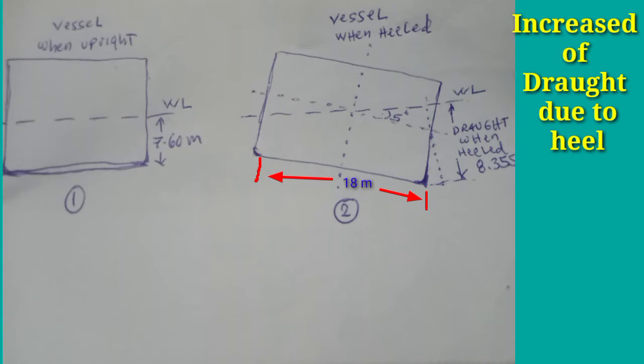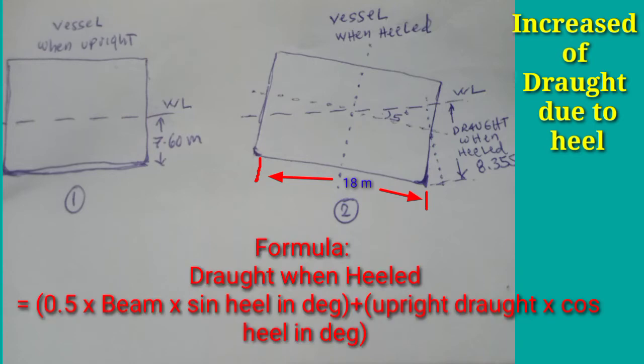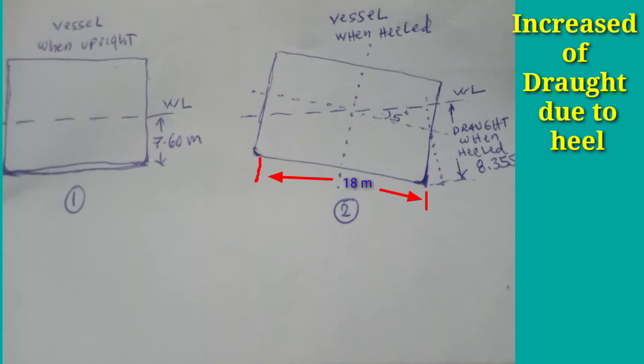To ensure that we are passing through a sufficient depth of water, have a look at how the draft increase is calculated. The formula to compute draft when heeled equals 0.5 times beam times sine of the angle of heel in degrees, plus upright draft times cosine of the angle of heel in degrees. As you can see in the illustration, the vessel is heeled by 5 degrees on the starboard side.